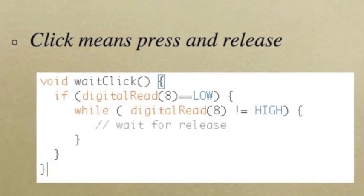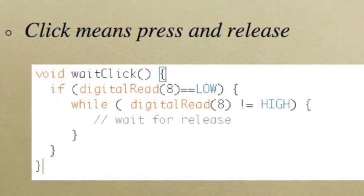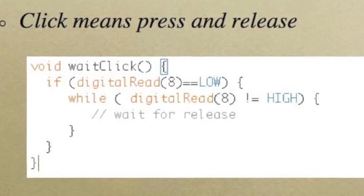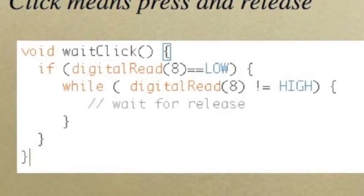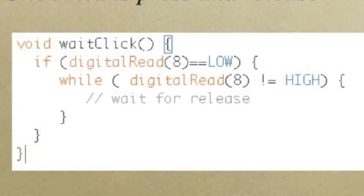Make use of a loop to detect the click wisely. Here's an example of the wait click function that I provided for you. In this function, I first detect for a click by checking for the logic low. Then I use a while loop to wait until the button is released.